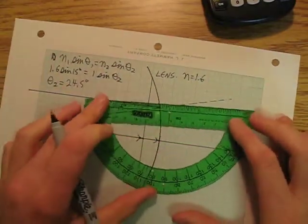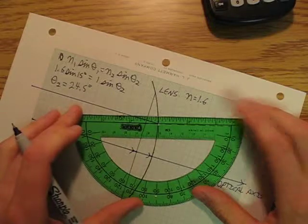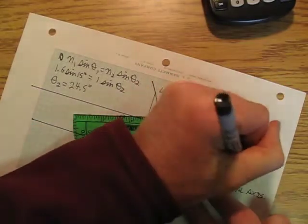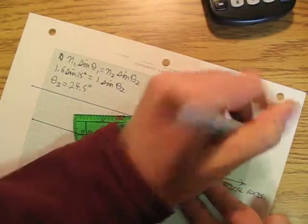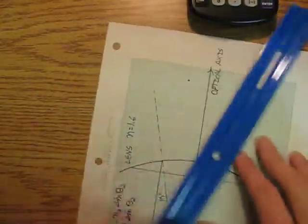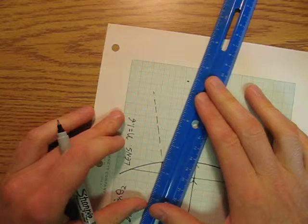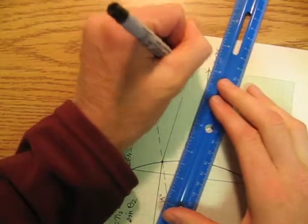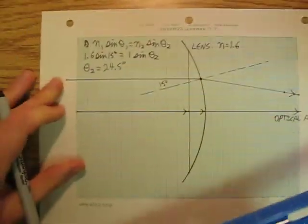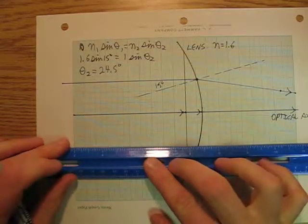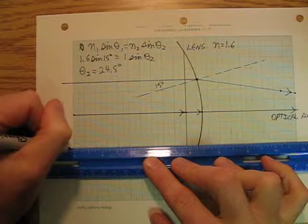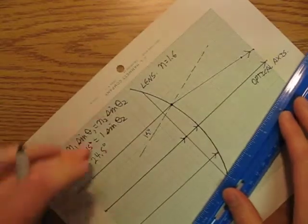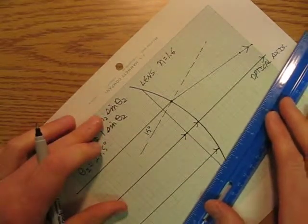And so what I'm going to measure out here is that it's going to bend away from the normal up to 24.5 degrees and so the ray of light is going to come in a little like this. Now the exact same thing is going to, this is going to be symmetrical, so the exact same thing is going to happen on this side of the lens and so it's going to come in somewhere like this.